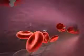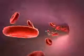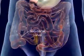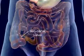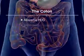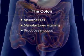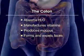The nutrients are now transported by the blood to all the cells of the body. The undigested food reaches the ileocecal valve and enters the large intestine, or colon. The colon absorbs water, manufactures vitamins, produces mucus, and forms and expels feces.